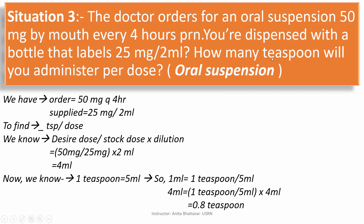But it is asked how many teaspoons to give. From the matrix table, we know 1 teaspoon equals 5 ml. So 4 ml multiplied by 1 teaspoon per 5 ml gives us 0.8 teaspoon. Therefore, 0.8 teaspoon of medication should be administered to the patient.